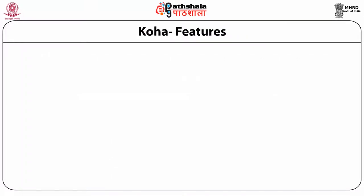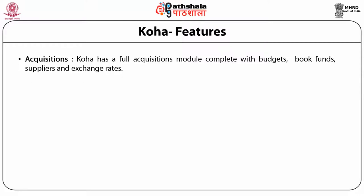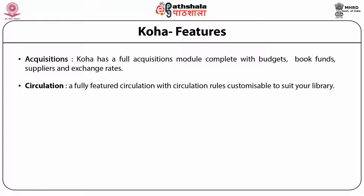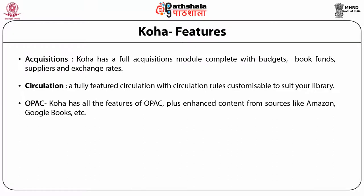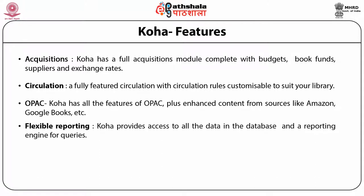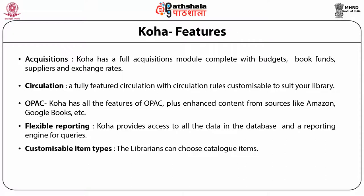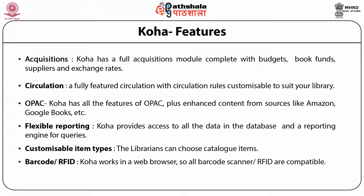The features of Koha include a full acquisition module complete with budgets, book funds, supplier and exchange rates. It has fully featured circulation with circulation rules customizable to suit the library. Koha has all the features of OPAC plus enhanced content from sources like Amazon, Google Books, etc. It provides access to all data in the database and a reporting engine for queries. It has customizable item types and is compatible with barcode scanners and RFID technology.